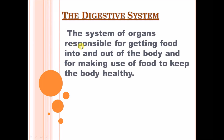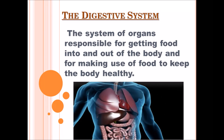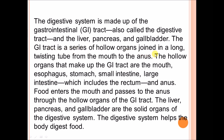The digestive system is defined as the system of organs responsible for getting food into and out of the body, and for making use of food to keep the body healthy. The digestive system is made up of the gastrointestinal tract, or GI tract, also called the digestive tract, and the liver, pancreas, and gallbladder.